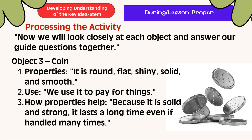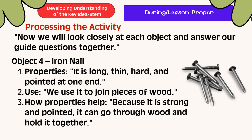Object 3: Coin. It is hard, flat, shiny, solid, and smooth. We use it to pay for things. Because it is solid and strong, it lasts a long time, even if handled many times. Object 4: The iron nail. Properties: it is long, thin, hard, and pointed at one end. We use it to join pieces of wood. Because it is strong and pointed, it can go through wood and hold it together.